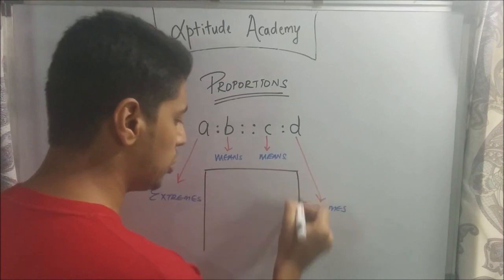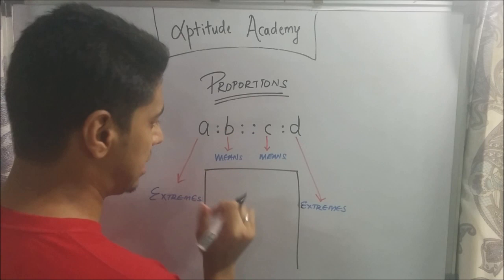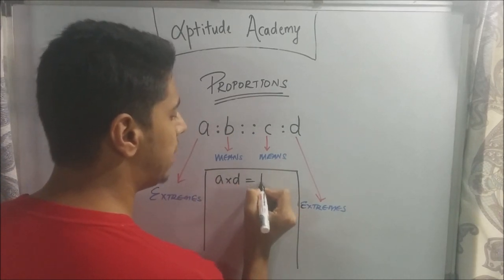So, a very important property in proportions is that the product of the extremes is equal to the product of the means. So, you are basically saying A into D is equal to B into C.